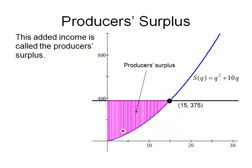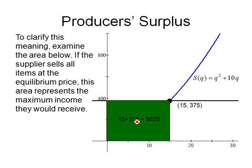This added income is the producer's surplus and amounts to the area that you see here. To clarify this meaning, let's look at the area we've already talked about. If the manufacturer supplies all 15 units at $375 per unit, they're going to receive $5,625. This is the most that they can receive. In reality, some people may be willing to supply for less than that.